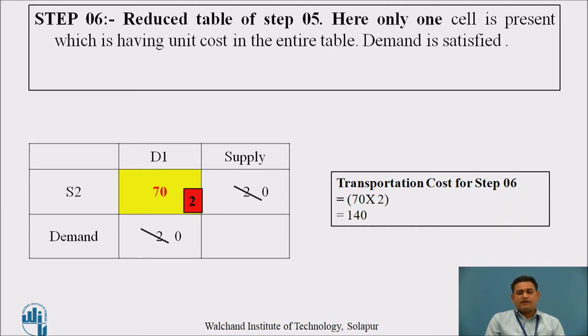The final table has destination D1 and source S2 remaining. The remaining demand is 2 and source S2 availability is 2. It is fully satisfied.